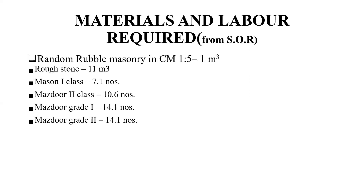For random rubble masonry in cement mortar 1:5, for one meter cube, rough stone required is 1.1 meter cube. Mason first class: 0.7 numbers; Mason second class: 10.6 numbers; Mazdoor grade 1: 14.1 numbers; Mazdoor grade 2 also included. We will see the next topic in the next class.